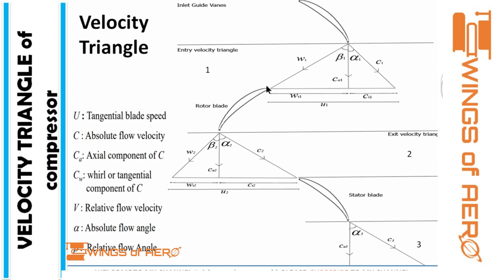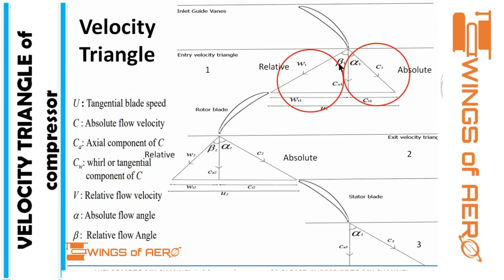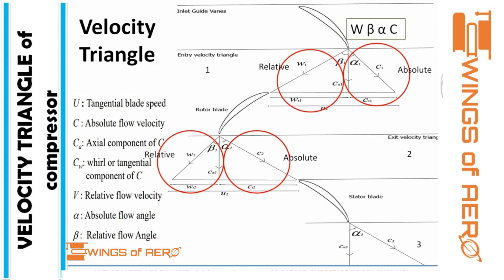What is beta? Beta is the relative flow angle — the angle on the relative flow side. Alpha is the absolute flow angle on the absolute flow side. To remember: alpha corresponds to absolute. You can use the memory trick W-beta-alpha-C: W for relative velocity (shaped like W), beta for relative flow angle, alpha for absolute flow angle, and C for absolute velocity. They come in a series: W, beta, alpha, C.